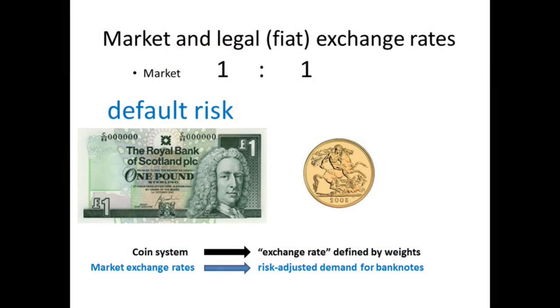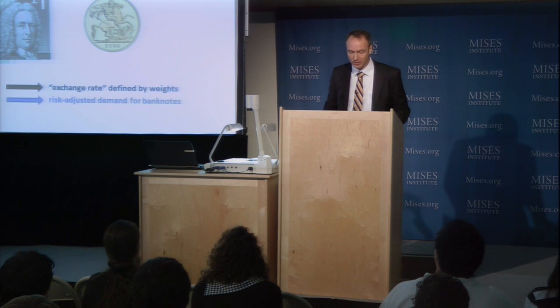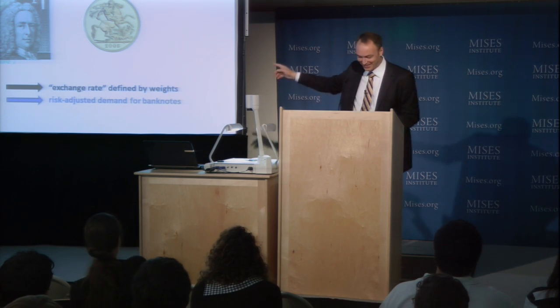The Bank of Scotland issues, among other things, one-pound notes. These one-pound notes in former times could be redeemed against base money. During the times of the gold standard, they could be redeemed against a gold coin of the same denomination. Here we have a sovereign — the standard British gold coin with the denomination of one pound. Today the purchasing power of a pound is about one-thousandth of the purchasing power of the gold contained in a sovereign. So now we have a competition between the bank notes and the coins. Market participants can use the bank note or the coin to make their payments — what are the factors determining their choice?